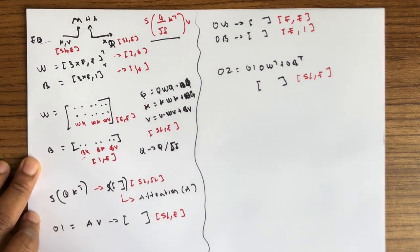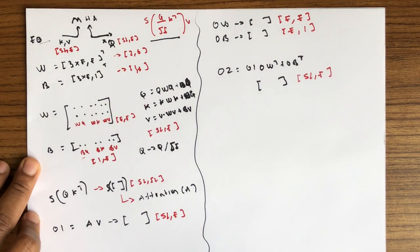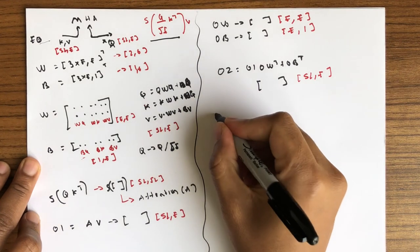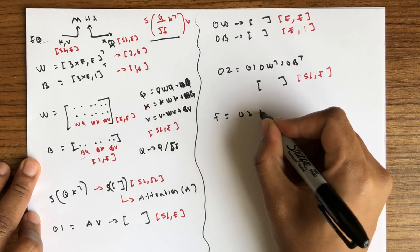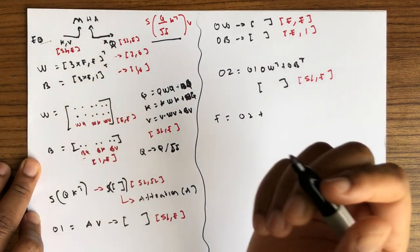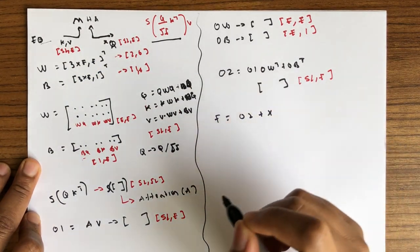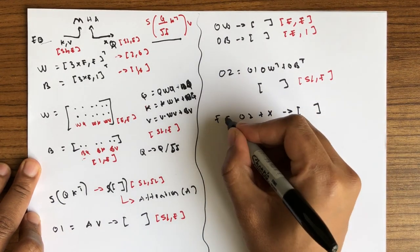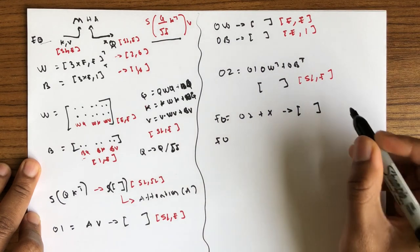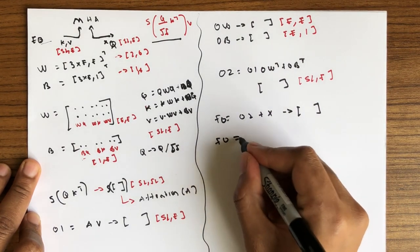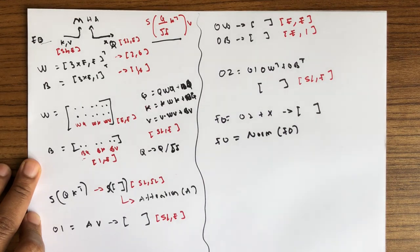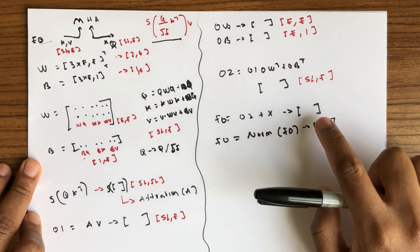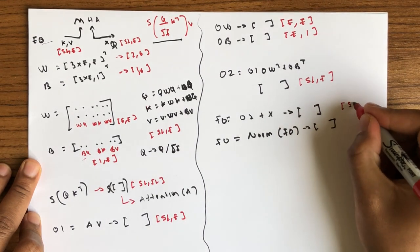We pull context from the encoder output to be able to make translation. The final output of this layer is O2 plus X, where X is the output of the previous layer, to get a new tensor. This final output is pushed into the normalization layer, where it will be normalized, giving a new tensor with dimension sl by e.